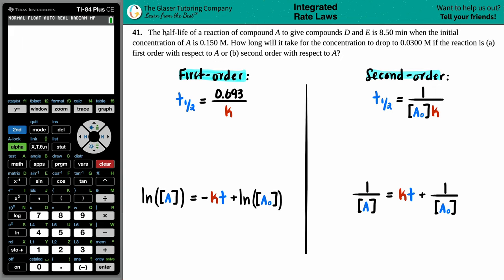Number 41. The half-life of a reaction of compound A to give compounds D and E is 8.50 minutes when the initial concentration of A is 0.150 molarity. How long will it take for the concentration to drop to 0.0300 molarity if the reaction is first order with respect to A, or second order with respect to A? Seems like we have two questions here. We want to find out how long it will take for a specific concentration to drop to 0.03 molarity if this reaction runs in a first-order fashion and then in a second-order fashion.